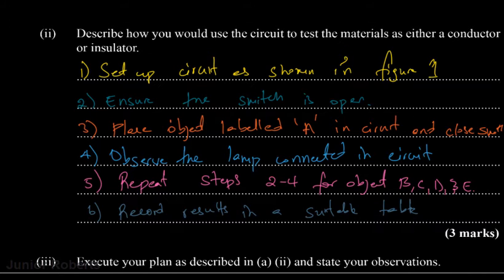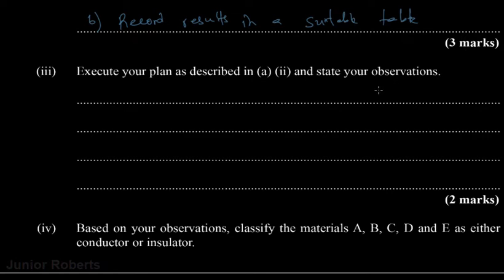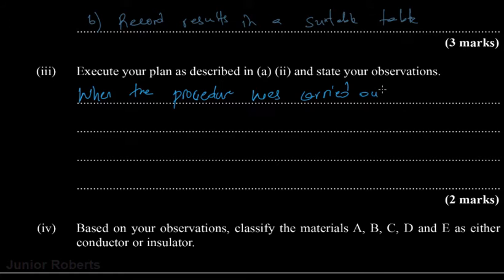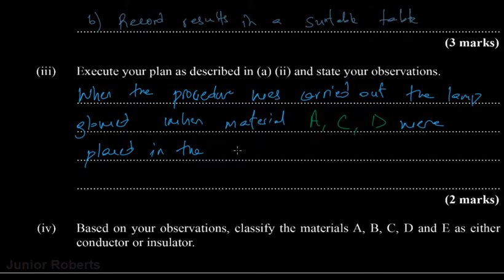Now it says execute your plan as described and state your observations. So when the procedure was carried out, the lamp glowed. That's our observation after we would have executed the procedure listed above.